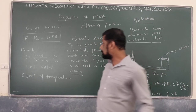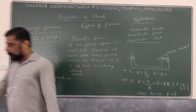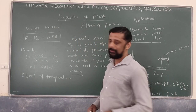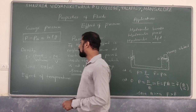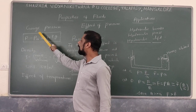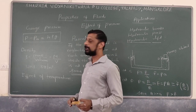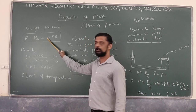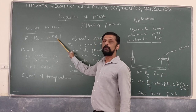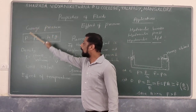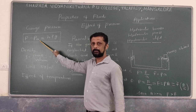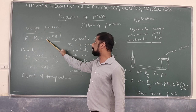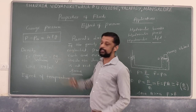Next, gauge pressure. What we actually measure as pressure is gauge pressure. Gauge pressure is defined as the difference between the hydrostatic pressure and the atmospheric pressure. The formula for gauge pressure is P − PA = HρG. So gauge pressure is given by HρG.